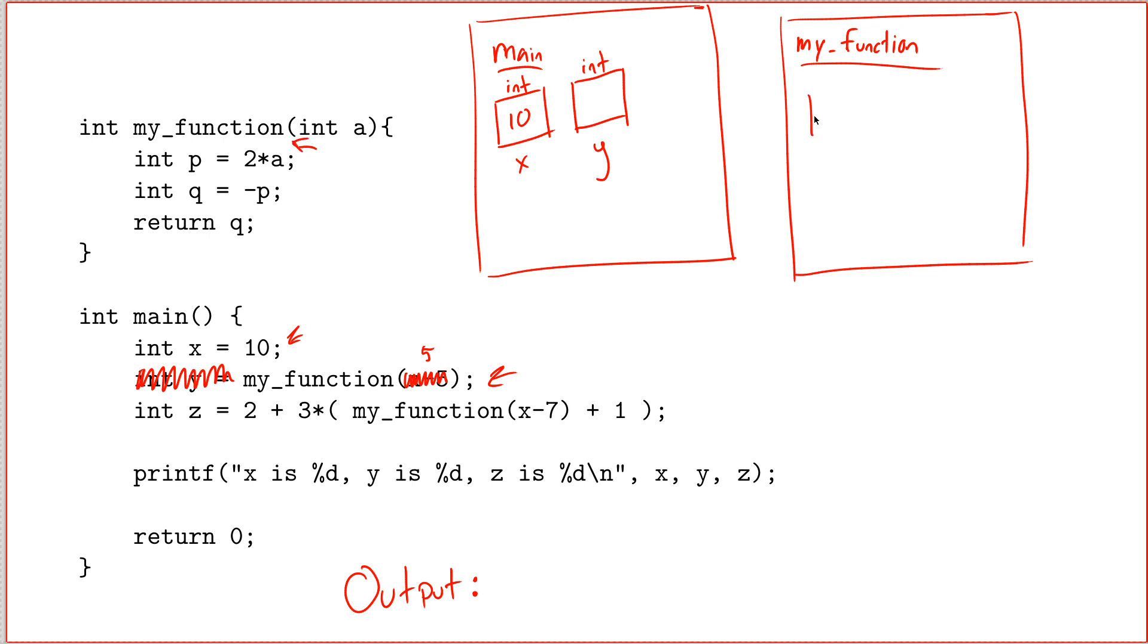The next thing we do before we start the code for the function is we add to our diagram for the function's scope a box for every one of its parameters. And what you'll notice is the box that I draw is exactly the same as a local variable for that function. And that's significant. It turns out that once the function starts, int a will behave exactly like any other variable. The only thing special about int a is that it was a parameter, which means it'll get a value when the function starts.